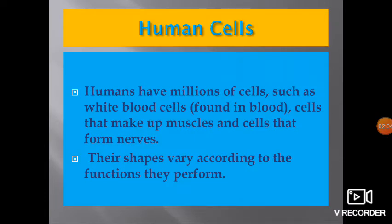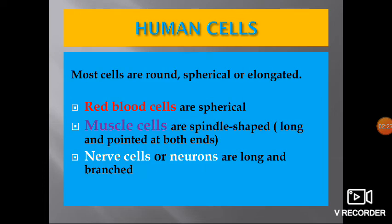Human beings have millions of cells such as white blood cells found in blood, muscle cells that make up muscles, and neurons or nerve cells that form nerves. Their shapes vary according to the functions they perform. Most human cells are round, spherical, or elongated.